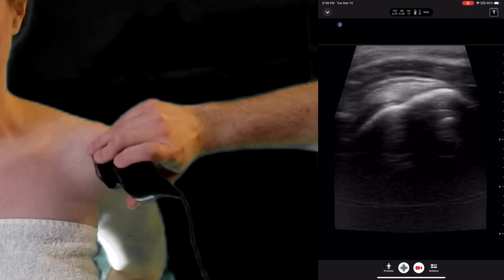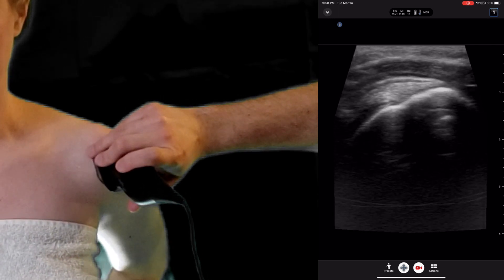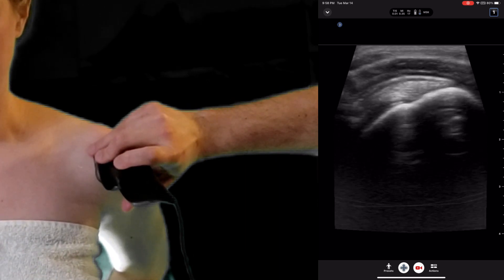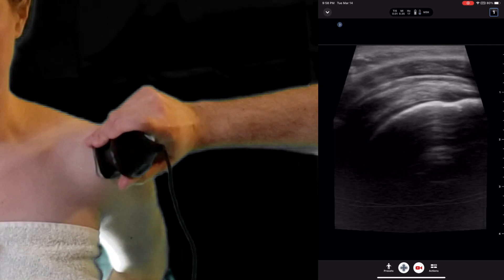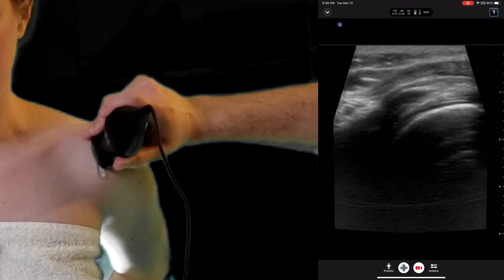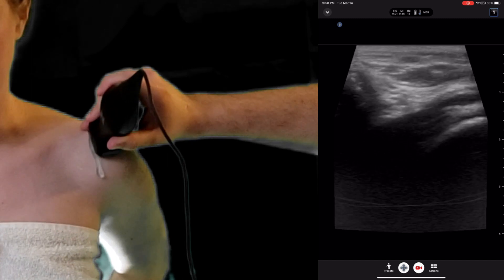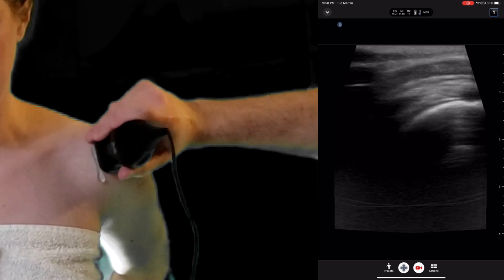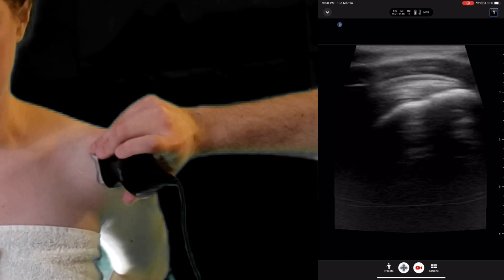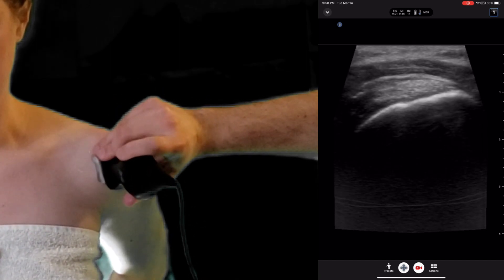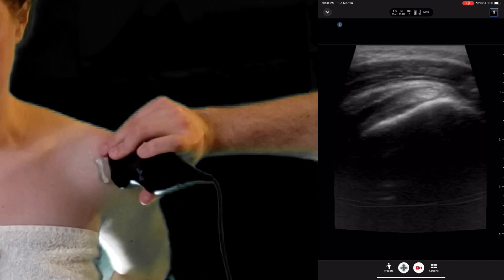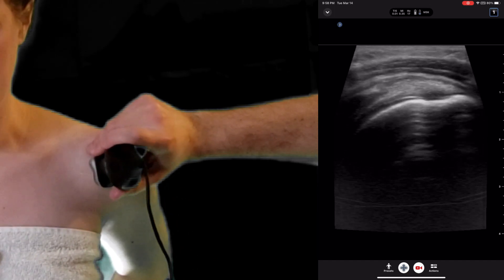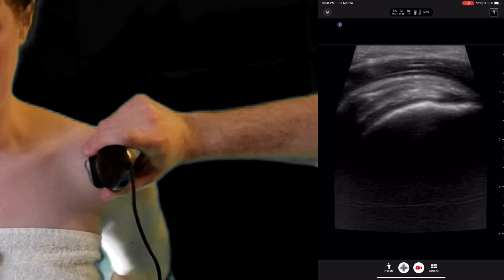And the supraspinatus, again, has that consistent bird's beak appearance, with tendon fibers running in similar fashion. We want to evaluate that tendon all the way until it disappears underneath the acromion. We want to look for any signs of incongruency, look for any signs of tendon rupture or tear.